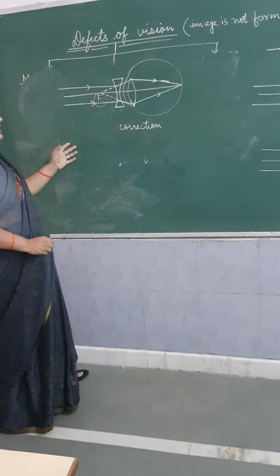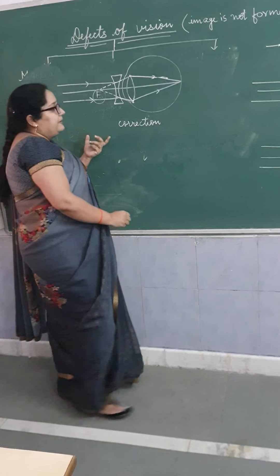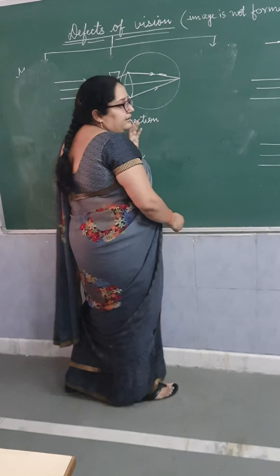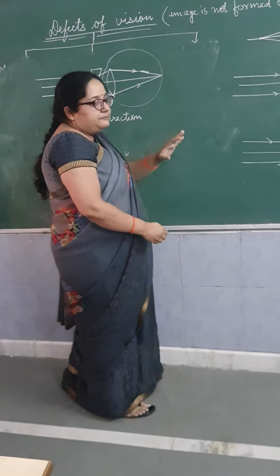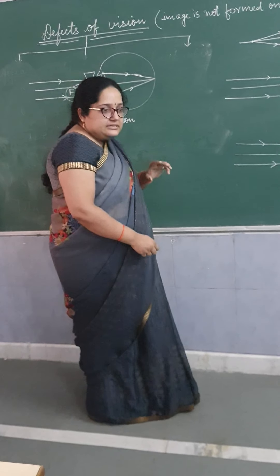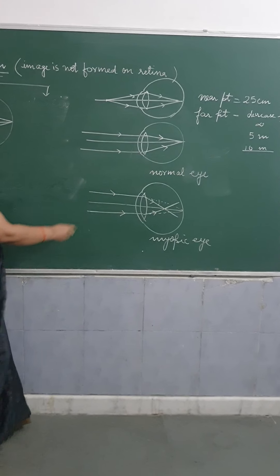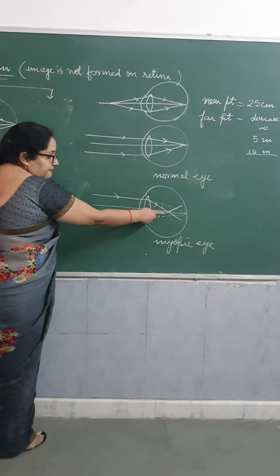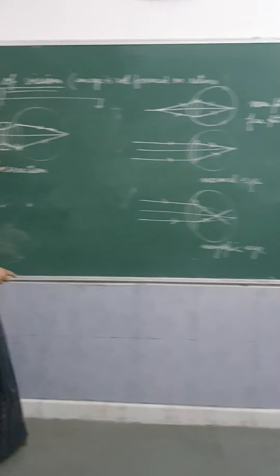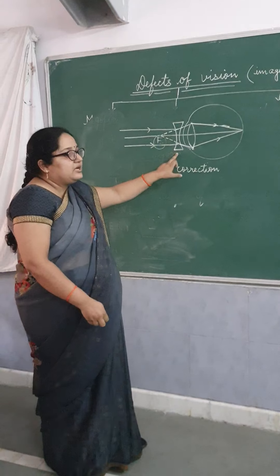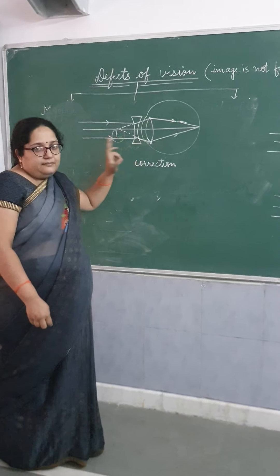To summarize: in myopia, the person cannot see far objects clearly. The near point remains unchanged, but the far point changes. The image is formed before the retina. For correction, we use a concave lens.